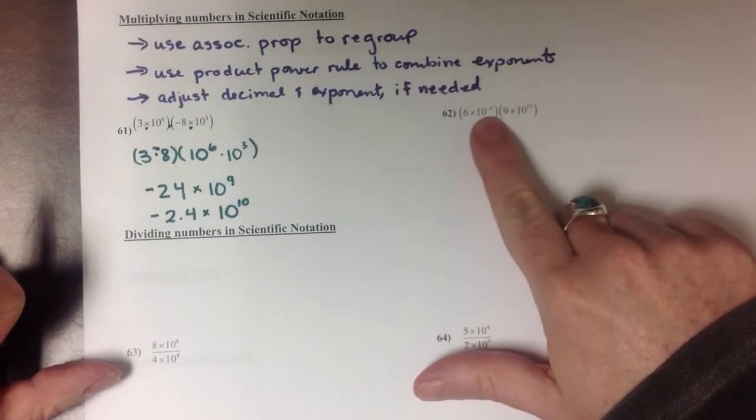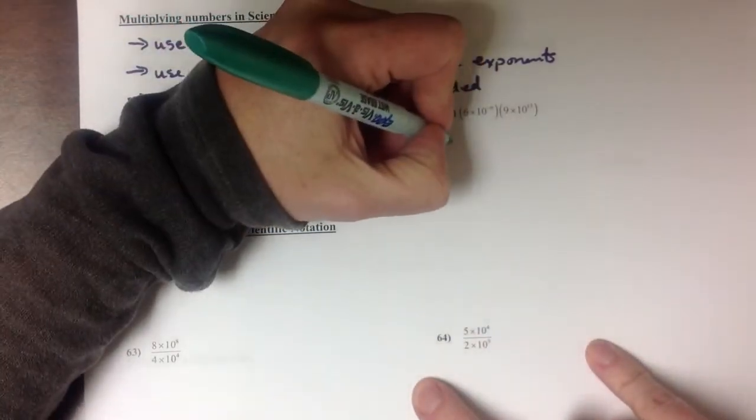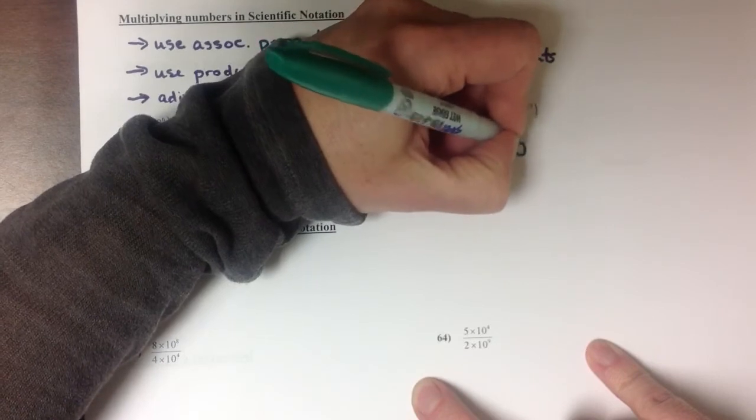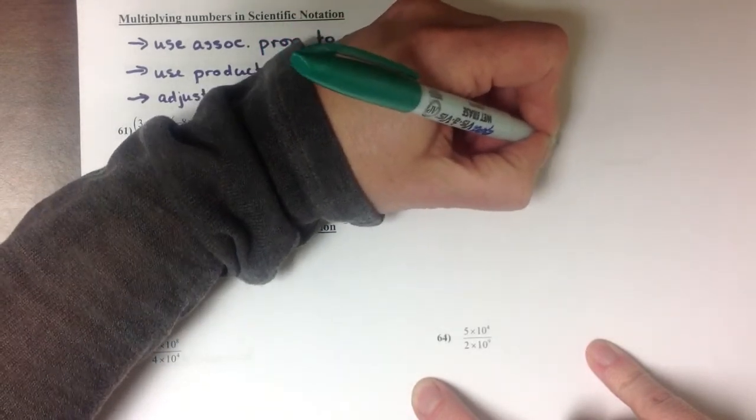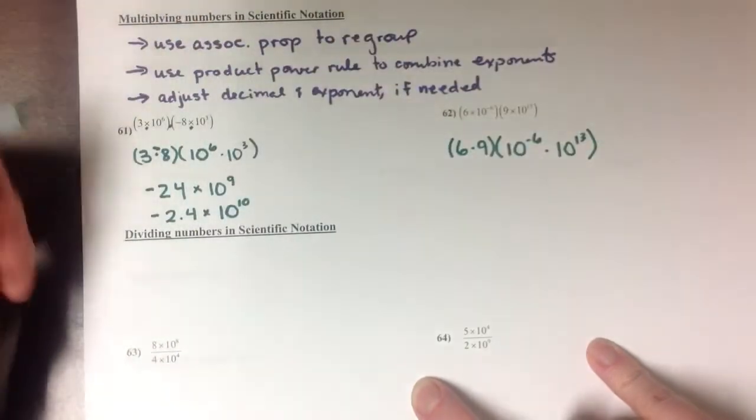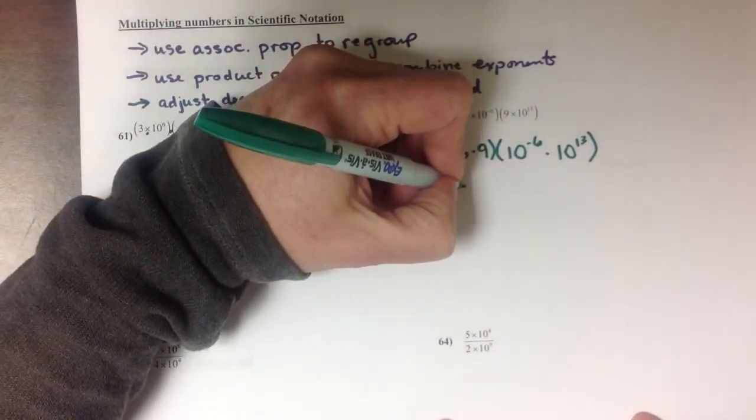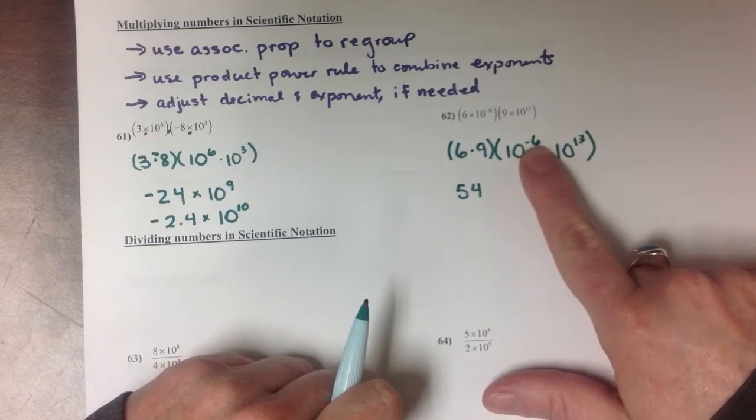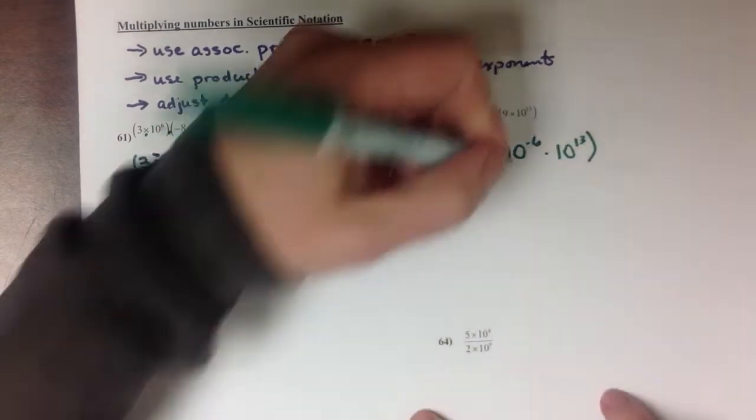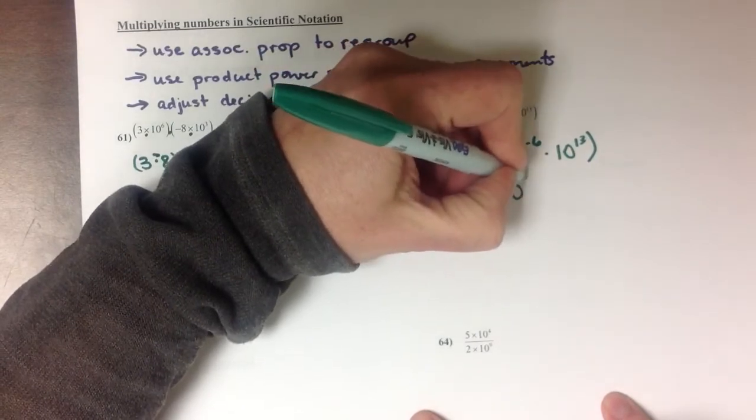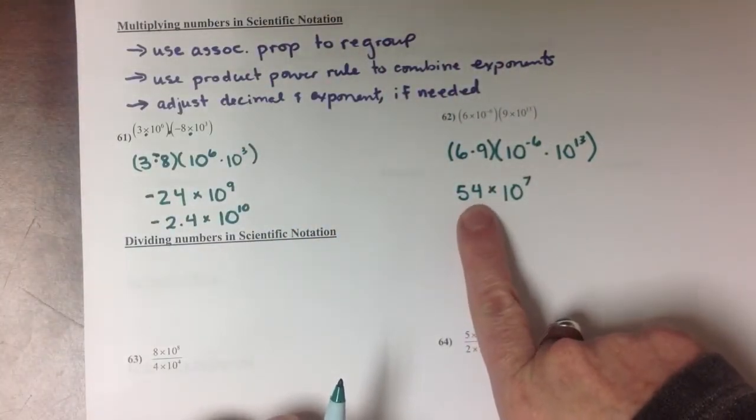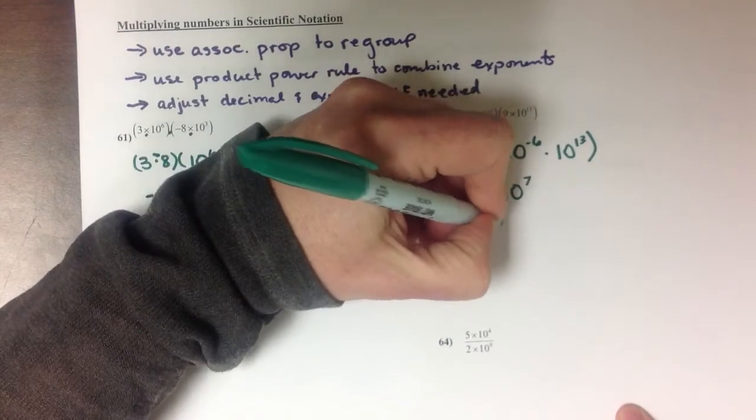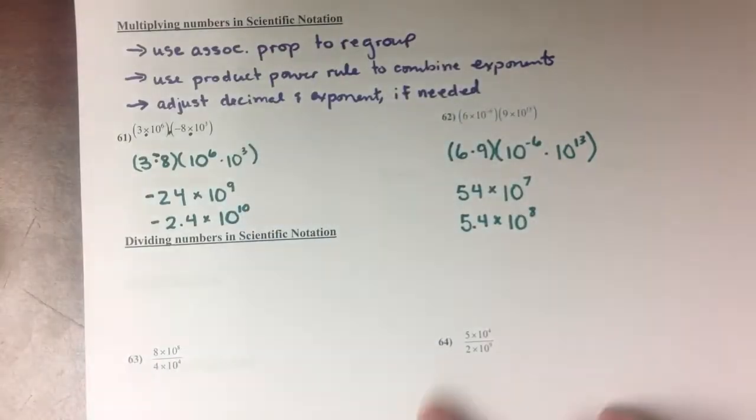Let's look at one more example of this. 6 times 10 to the negative 6 times 9 times 10 to the 13th can be rewritten as 6 times 9 times 10 to the negative 6 times 10 to the 13th. My 6 times 9 is 54, and 10 to the negative 6 times 10 to the 13th is going to be 10 to the negative 6 plus 13, which is 10 to the 7. Again, I have the problem of 54 being a 2-digit number instead of a 1-digit number, so I'm going to rewrite it as 5.4, which will make my exponent go up to 8.